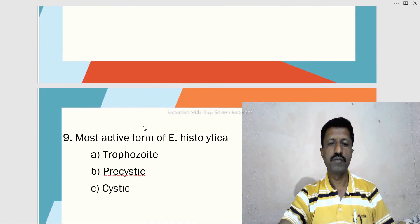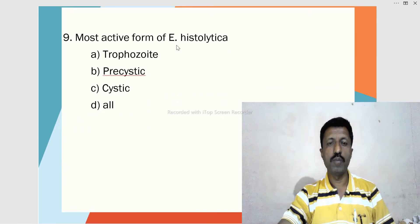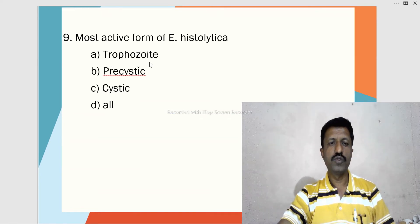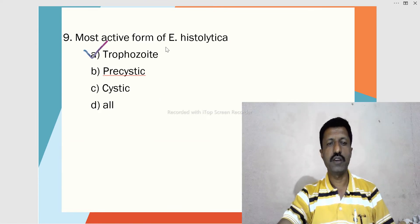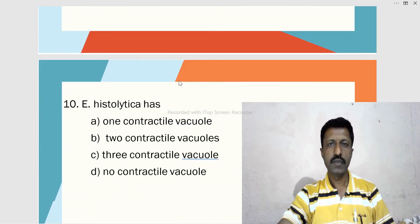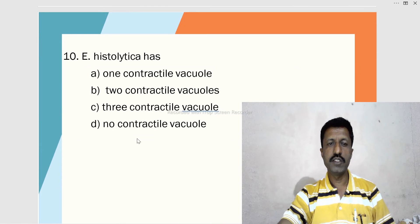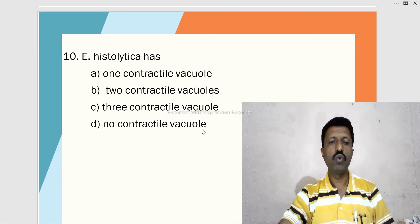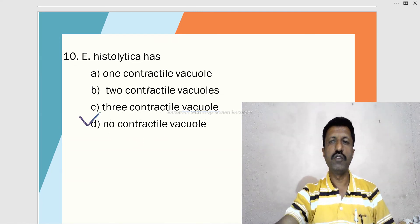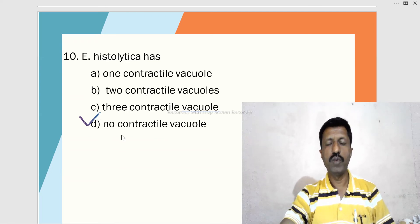Ninth MCQ: The most active form of Entamoeba is — A. Trophozoite, B. Pre-cystic, C. Cystic, D. All. The trophozoite form is the most active form. Tenth MCQ: Entamoeba histolytica has — A. One contractile vacuole, B. Two, C. Three, D. No contractile vacuoles. The correct answer is D — there are no contractile vacuoles in Entamoeba histolytica.